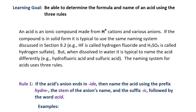An acid is an ionic compound made from hydrogen cations with various anions. If the compound is in solid form, it is typical to use the same naming system discussed in section 9.2. For example, HF is called hydrogen fluoride and H2SO4 is called hydrogen sulfate. But when dissolved in water, it is typical to name the acid differently. For example, HF would be called hydrofluoric acid and H2SO4 is sulfuric acid.